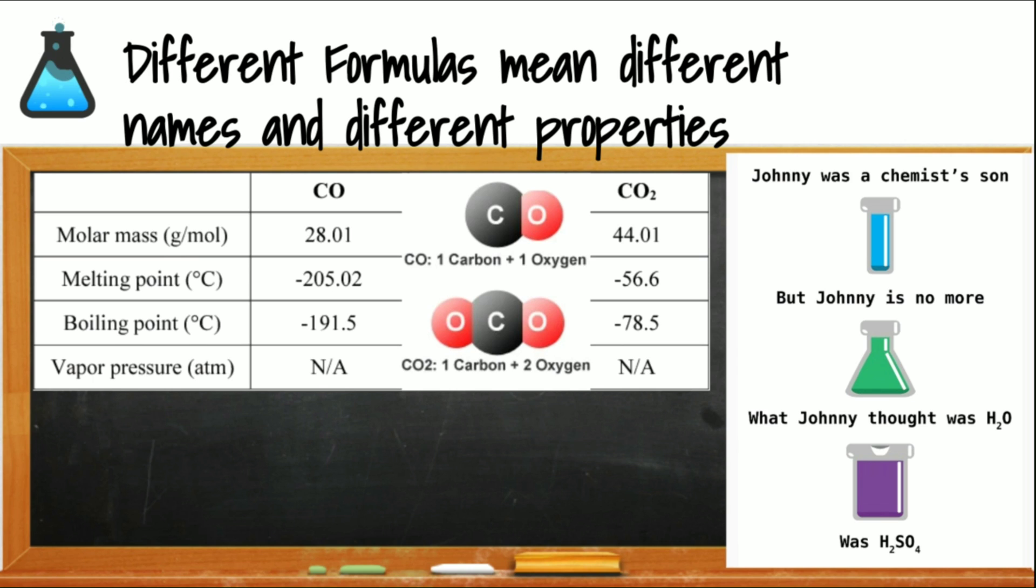Carbon monoxide is an odorless, colorless, poisonous gas, and here you can see some of its properties, while carbon dioxide is also an odorless, colorless gas, but it's not highly poisonous to humans. That leads us to a funny joke that tells us that when you have a different formula, you get a different name and it has very different properties. Johnny was a chemist's son, but Johnny is no more. What Johnny thought was H2O was H2SO4. We can see that the formulas are different. H2O we know is water and H2SO4 is actually sulfuric acid. If you change the formula, you'll change the name, water versus sulfuric acid, and then you'll change the properties.